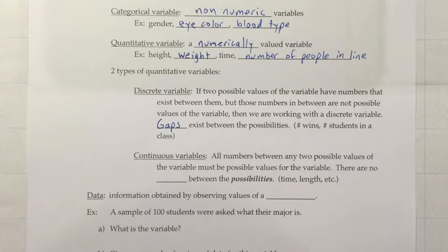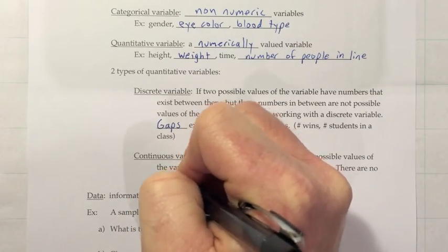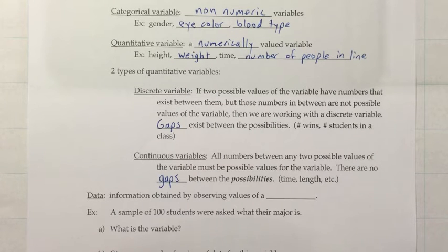So, on a continuous variable, all numbers between any two possible values of the variable must be possible values of the variable themselves. So, there's no gaps between the possibilities when you're dealing with something that's continuous. So, time and length are like that, where you can get all these decimal values in between, like the 3.87 seconds that I mentioned earlier.